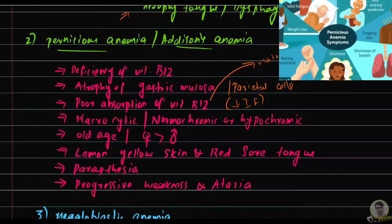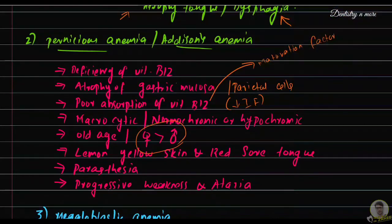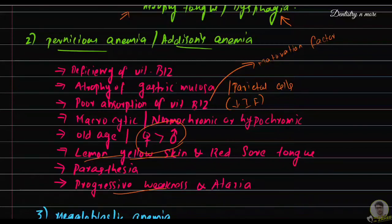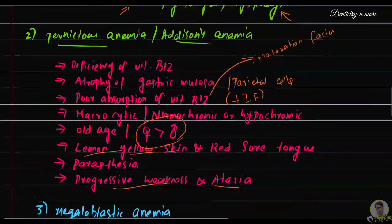Pernicious anemia is common in old age and more common in females — female predilection is present. It is associated with other autoimmune diseases like disorders of the thyroid gland and Addison's disease. Characteristic features include lemon yellow skin, red sore tongue, and neurological disorders such as paresthesia (abnormal sensations like numbness, tingling, burning), progressive weakness, and ataxia (muscular incoordination).